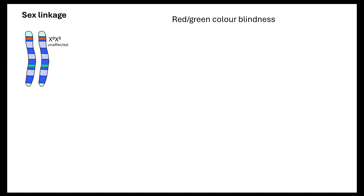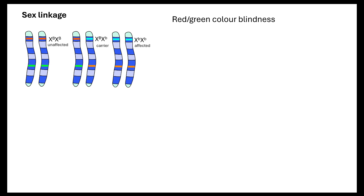Colour blindness is a recessive trait. If you are a homozygous dominant female, you are unaffected by red-green colour blindness. If you are heterozygous — carrying one dominant allele and one recessive allele — you are classed as a carrier. If you are female carrying the homozygous recessive alleles, you would be affected with colour blindness.